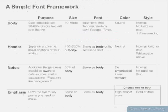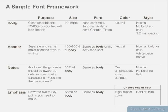Here is the simple font framework with each of those four styles. Body text — the goal is to have clean, readable text. The font size will be between 10 and 16 points, and we'll use a typical, popular font like Arial or Georgia. The color should be neutral and the style should be normal.